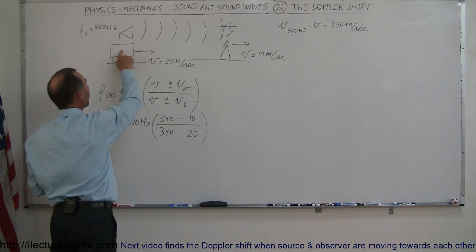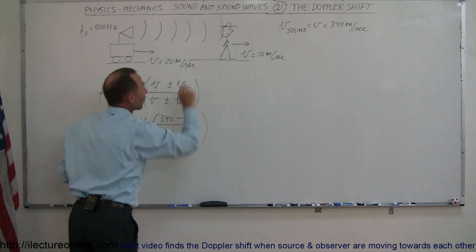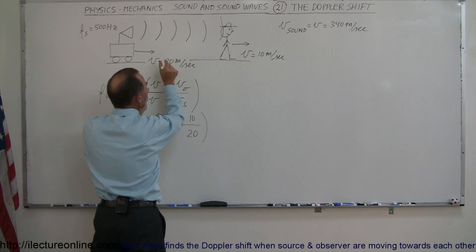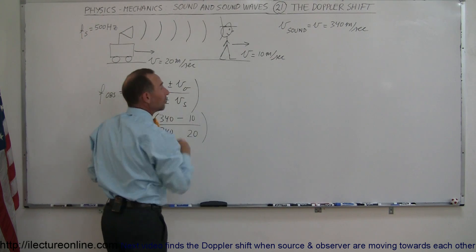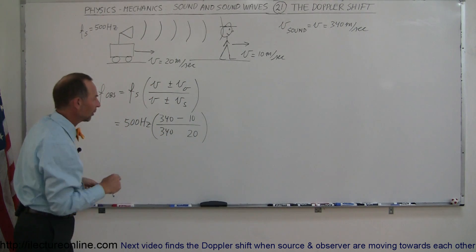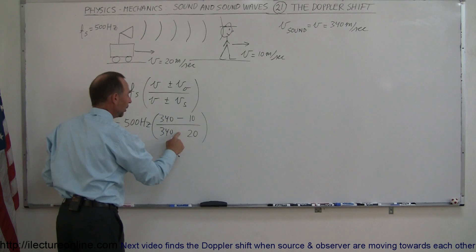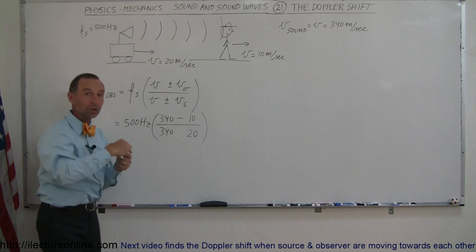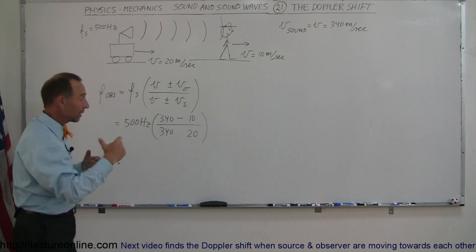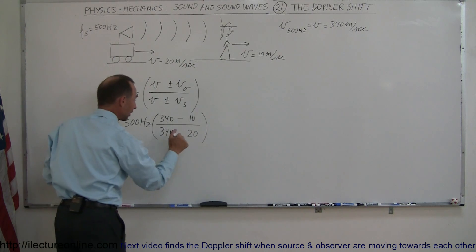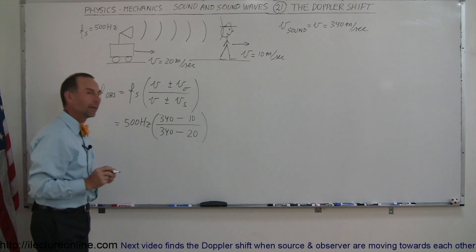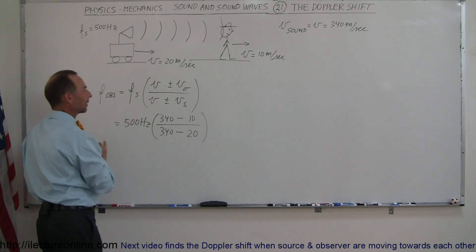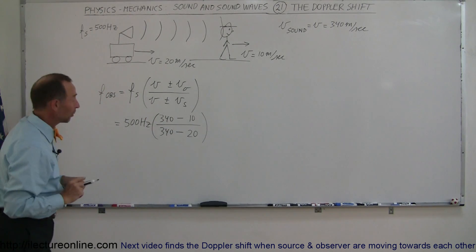With the source, the source is moving towards the observer, so that would cause the waves to be bunched up — smaller wavelengths, higher frequency. To get a larger frequency, we need to make the denominator smaller, so we need a negative in the denominator as well. That will cause the denominator to be smaller, which causes the overall frequency to be bigger. So both signs, in this case, will be negative.